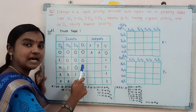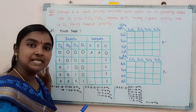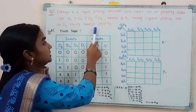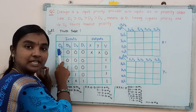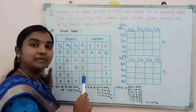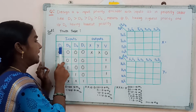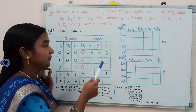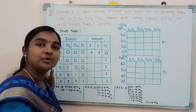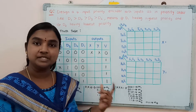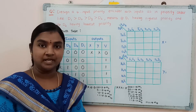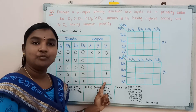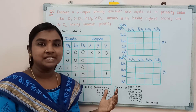The truth table consists of input values d0, d1, d2, d3, but here I am going to write the input values as per the priority. The lowest priority bit is d2, so d2 is considered first, and the highest priority input d1 is considered last. So the input columns are d2, d3, d0, d1, and the outputs are x, y, and v, where v is the valid output indicator. If v is 0, we are not applying any input values. If we are applying one or more inputs, v is 1 for all those combinations.